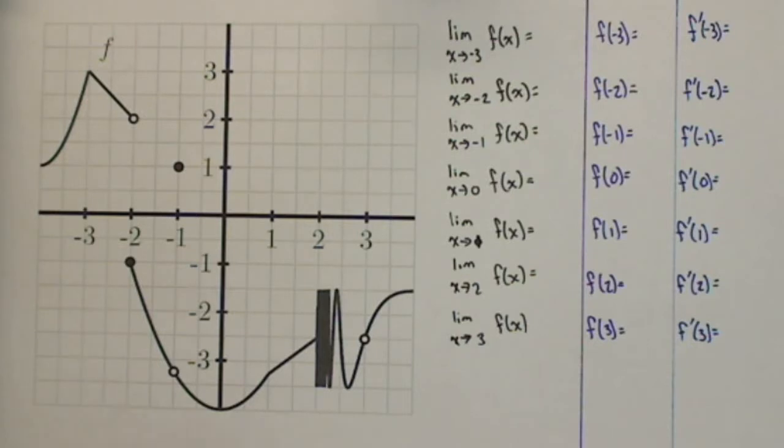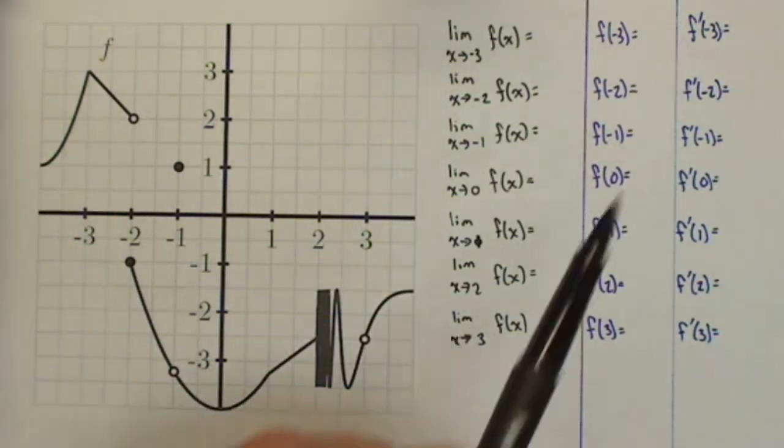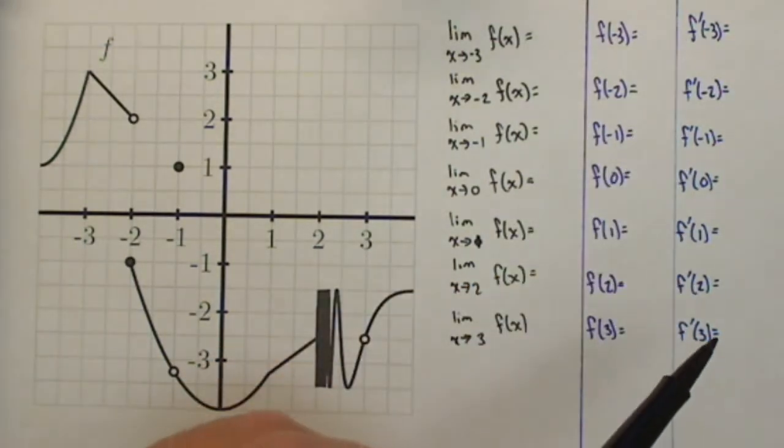In preview activity 1.7, we're going to look at the behavior of a function given by f, the graph here, by looking at its limit at some values, its function at some values, and the derivative if it exists at some values.